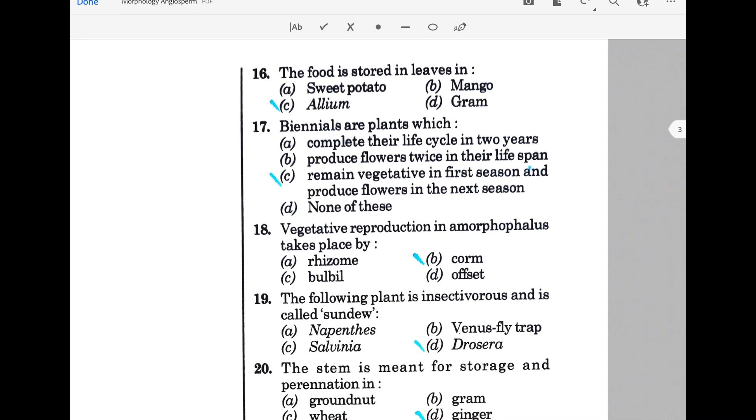Biennials are plants which remain vegetative in the first season and produce flowers in the next season. Vegetative reproduction in Amorphophallus takes place by corm. The insectivorous plant called sundew is Drosera. The stem is meant for storage and perennation in ginger.